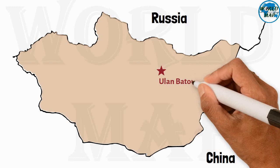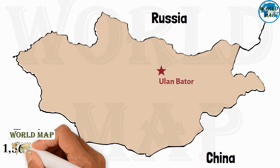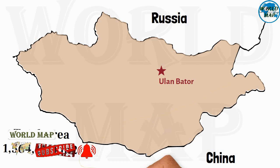Capital of Mongolia: Ulaanbaatar. Land area: it covers an area of 1,564,116 square kilometers.